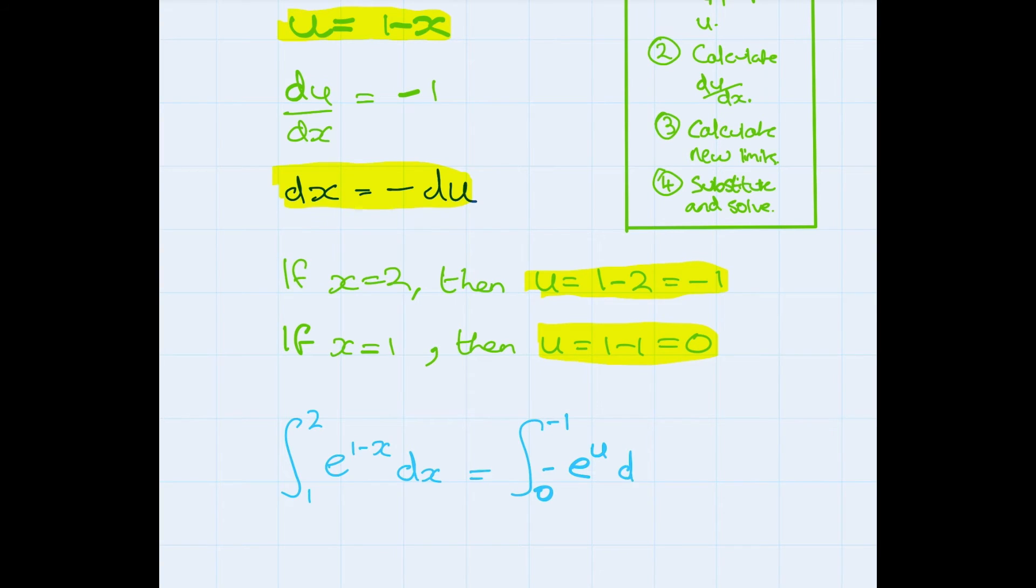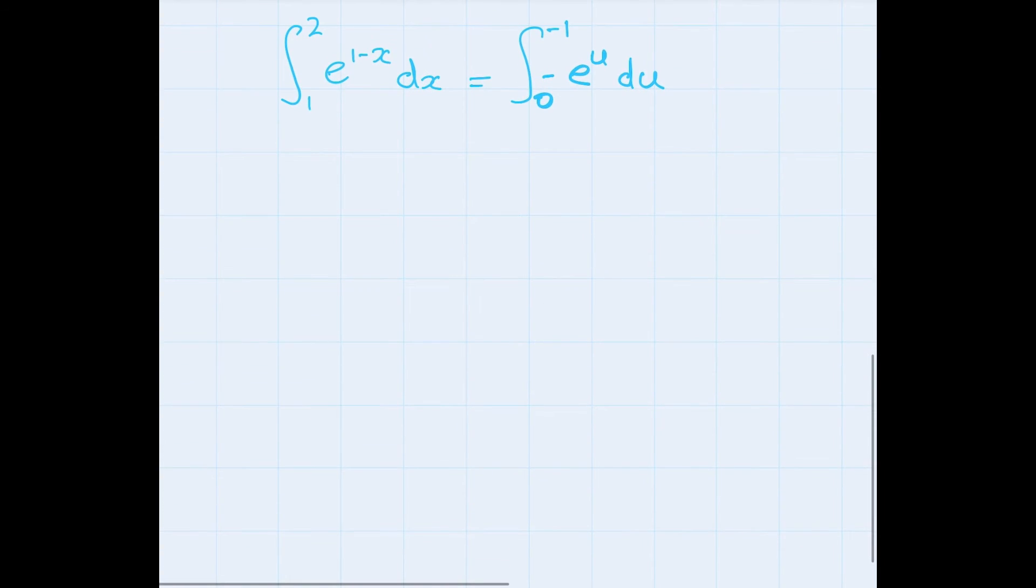Where do we go from here? Something to note is that our new limits are sort of the wrong way around. When we're integrating, we have the biggest number on the top. Luckily we have this great result that says if we have an integral between a and b of f of x dx, this is the same thing as minus the integral with the limits swapped around. And this is a very basic result you'll learn in A-level maths.